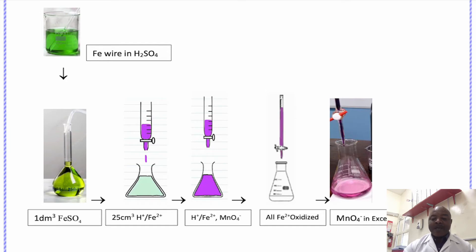After a period of time, the color changes from purple to colorless, and then a permanent pale purple color is observed. That is the end point of the titration.